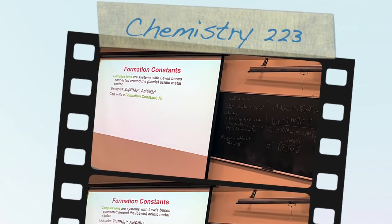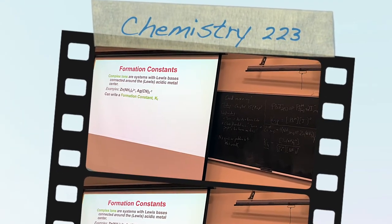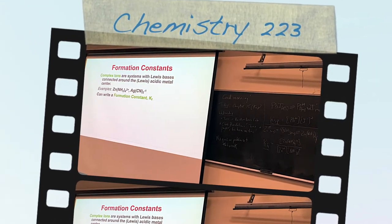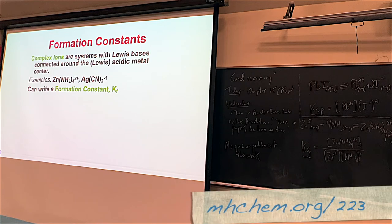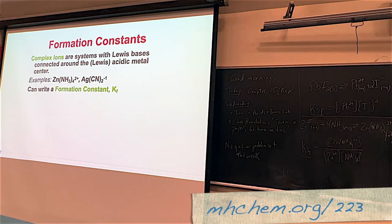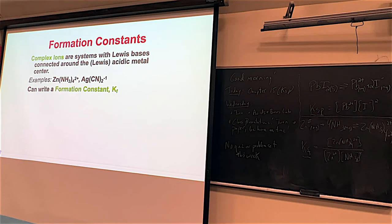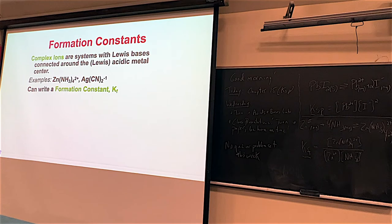This last section of the chapter revisits formation constants, which we danced around in Chem 223 the first couple chapters. A formation constant is a type of equilibrium constant, but it's for making complex ions. The one we looked at in the Le Chatelier's principle lab was zinc with four ammonias around it, which made the solid disappear.